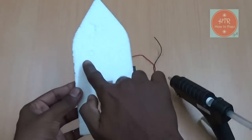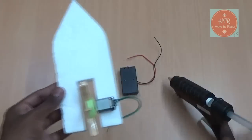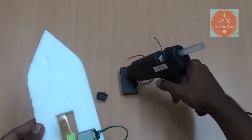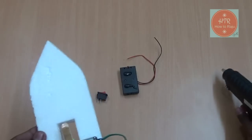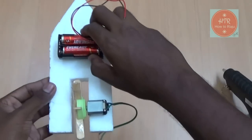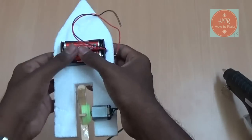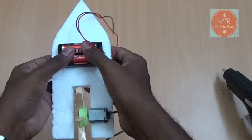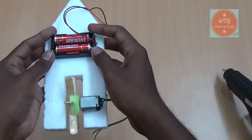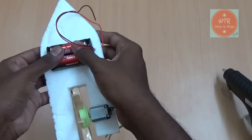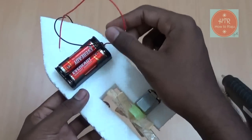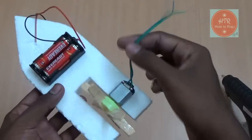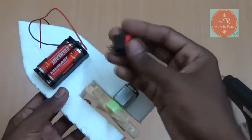Now stick the battery holder in this place using the glue gun. This is the right place for the holder. Connect the first wire of the motor and the battery holder together directly, and the second wire of the motor and the battery holder using the switch.